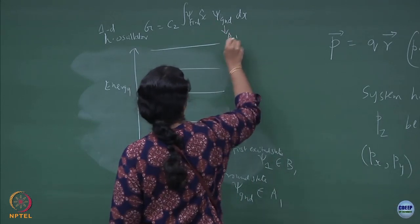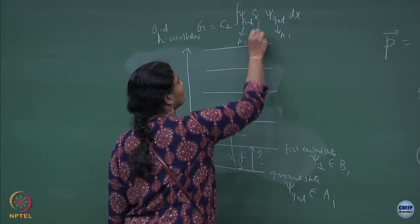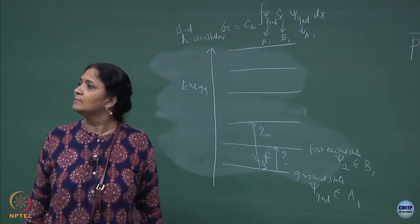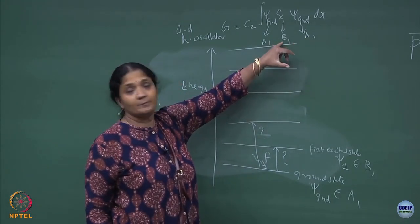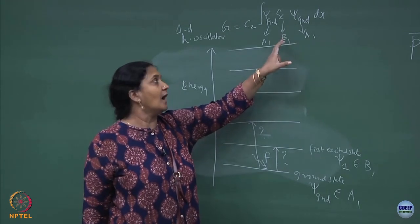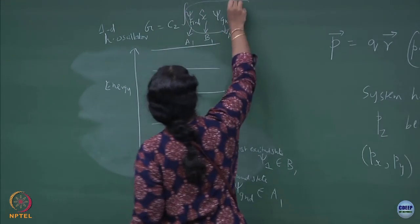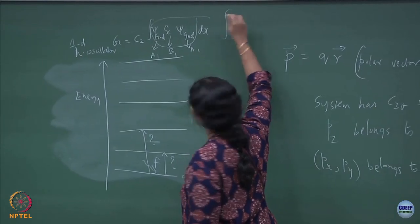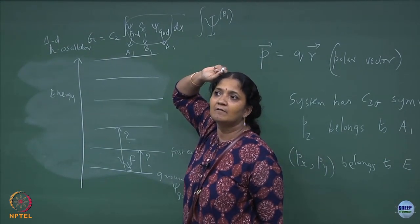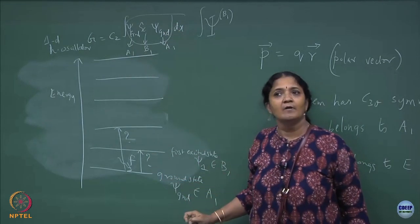If this belongs to A1, if this also belongs to A1, and the x operator belongs to B1, then you can show that the product of A1 with B1 is B1, and B1 with A1 is also B1. So ultimately this object can be treated as something which depends on B1. This is what I get out of this in group theory using tensor products — states also belong to irreducible representations.